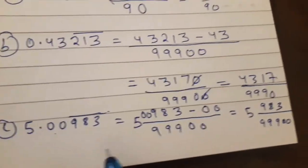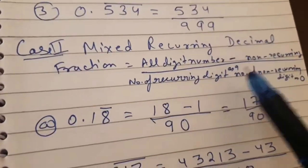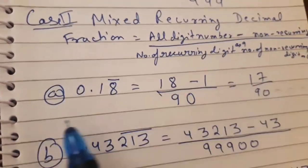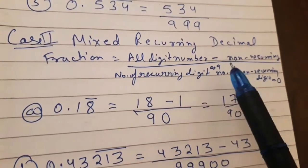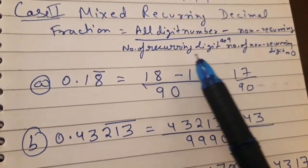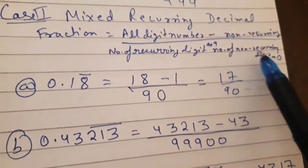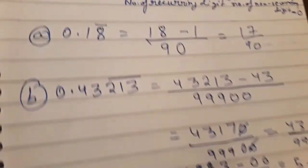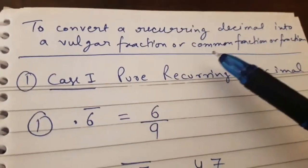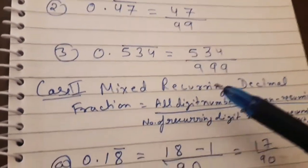In this way you can convert a mixed recurring decimal into a fraction according to this rule: all digit number minus non-recurring digit, divided by the denominator where you write nine for each recurring digit and zero for each non-recurring digit. This applies to both pure recurring and mixed recurring decimals.